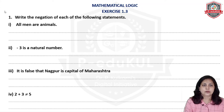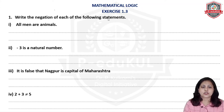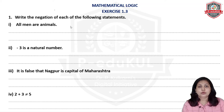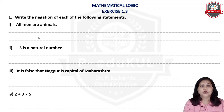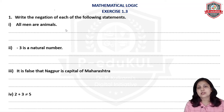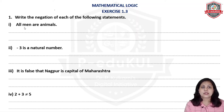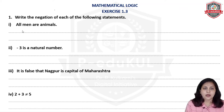We will write the negation of each of the following statements. We will not use opposite words. The first statement is: 'All men are animals.' We are doing this in maths where we have logic to use, and negation means we use 'not'. So, the negation will be: 'Some men are not animals.'